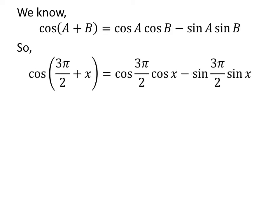Let us apply the above identity for cosine of 3 times pi upon 2 plus x. Here, a is 3 times pi upon 2 and b is x.